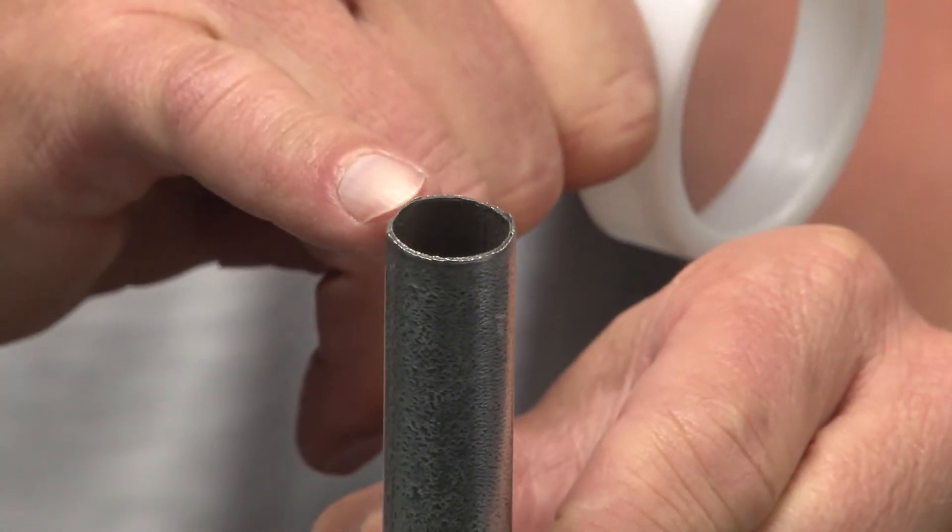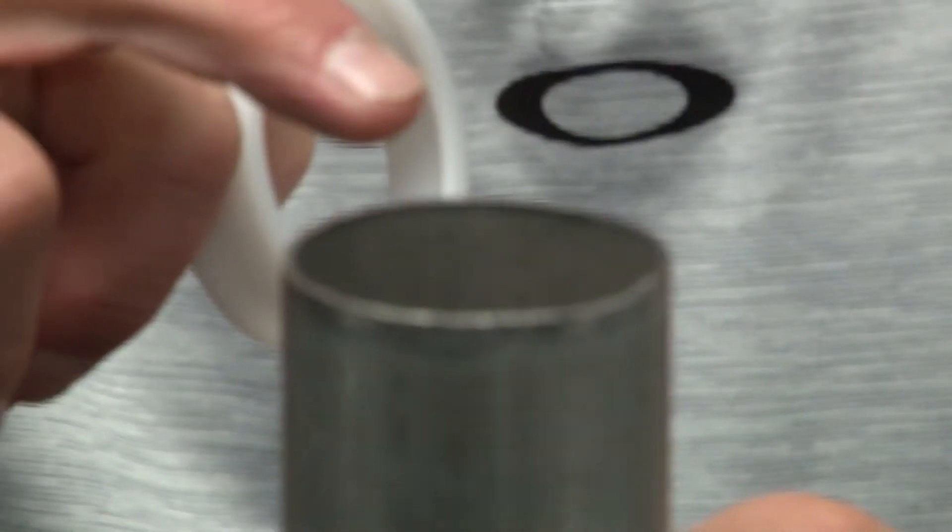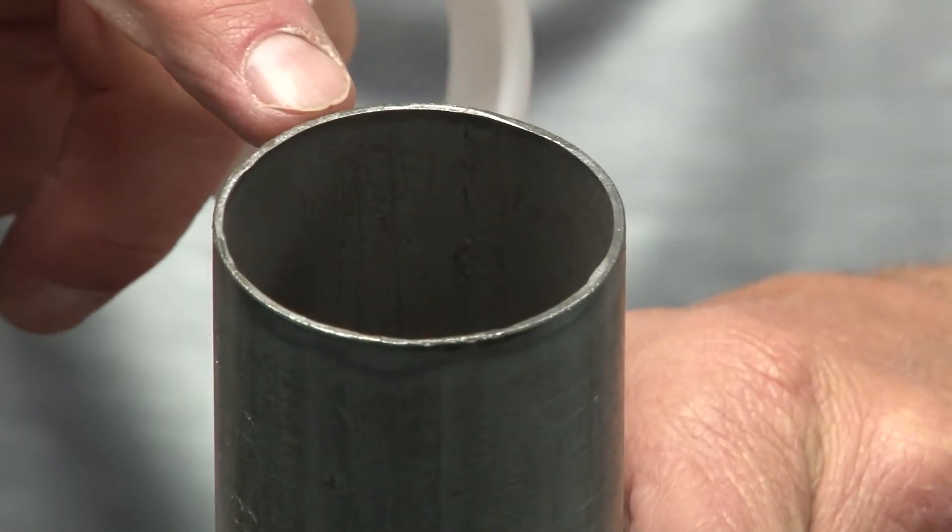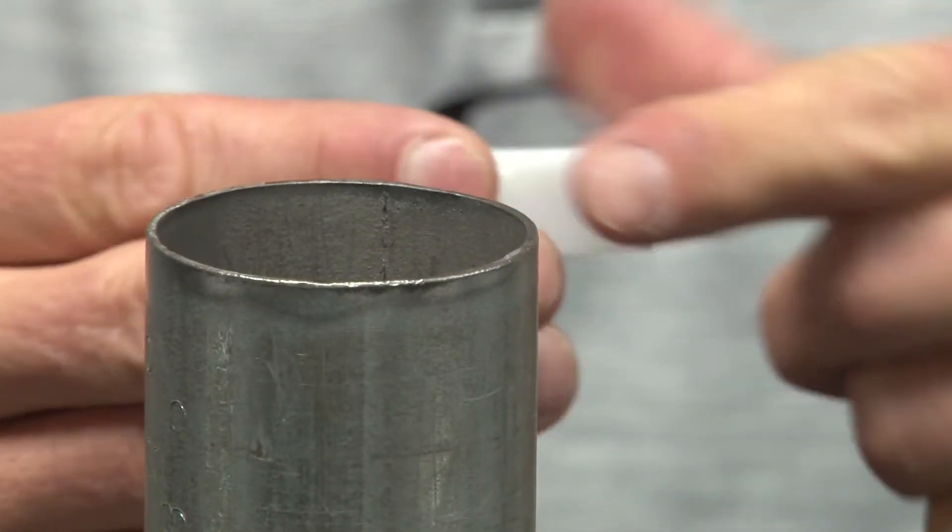As you can see, field cut conduit has a sharp rough edge that often can cut the jacket on the cable. In order to prevent this dangerous situation, Garvin Industries now manufactures what we call a bang-on insulating bushing.